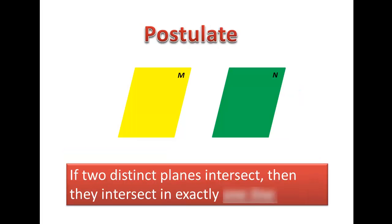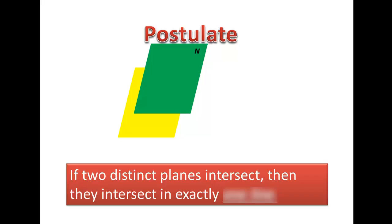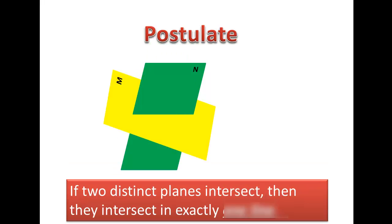Our last postulate has to do with two planes. If we take these planes and they intersect, then their intersection is exactly... let me actually change the viewpoint of these planes. So what I've done here is I've just taken plane N and I've just put it right through plane M. And their intersection is exactly, it is just a line. Makes sense.